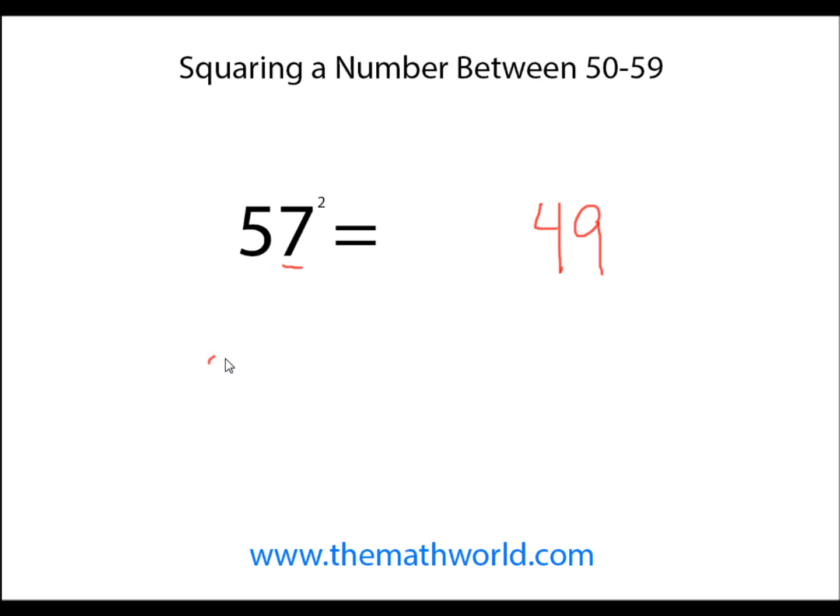And the next thing we do is take 25 and add the ones digit number. In this case, it's 7. So 25 plus 7 is 32. So 57 squared is 3,249.